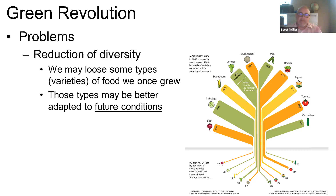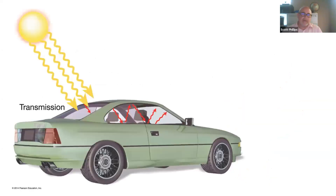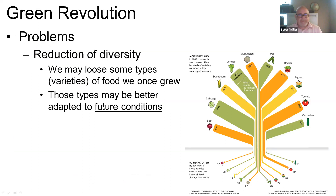Over time we're really bottlenecking the types of food that we're growing. One reason that may be a concern is that some varieties of food may be better adapted to future conditions, and when we talk about future conditions, one obvious thing to worry about is climate change.